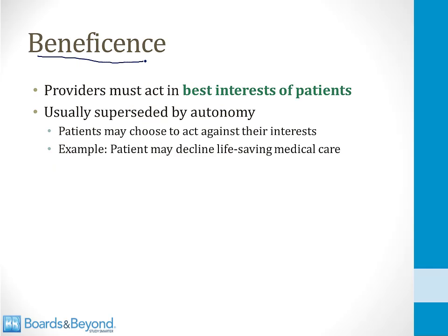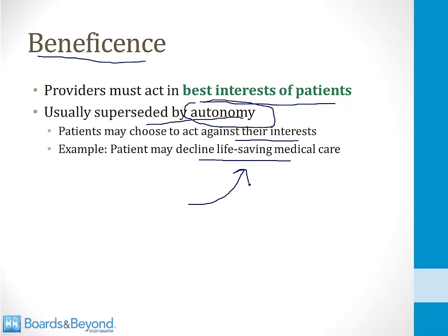The next core principle is beneficence, and this refers to the fact that providers must act in the best interests of their patients. This is fairly obvious — you don't want to harm your patients — but what you need to appreciate about beneficence is that it is usually superseded by autonomy. Autonomy is the most important principle in the United States, so patients may choose to act against their best interests. For example, a patient may decline life-saving medical care, and the patient is allowed to do that because we respect their autonomy, even though beneficence says we should not allow the patient to decline that life-saving medical care. In other words, autonomy supersedes the principle of beneficence.